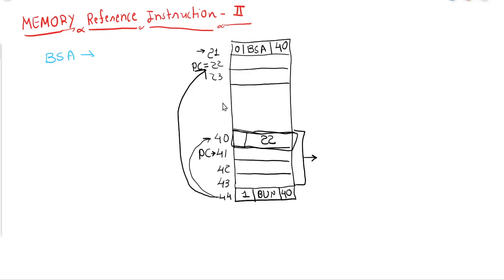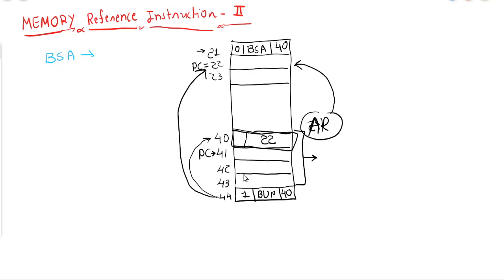If it is zero, the program counter jumps directly, but here it is one. So first it will go to that location, retrieve 22, then 22 will be stored into the address register, and then the system will execute the branch. There will be two steps: first, jump to the location and store the return address, then increment the address register. In the next step, load the new value into the program counter and resume execution. For memory reference instructions we get output in the range d0 to d6; for BSA we get output on d5.